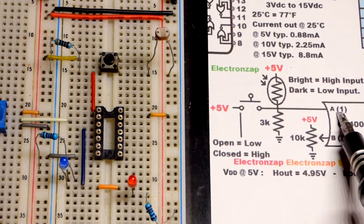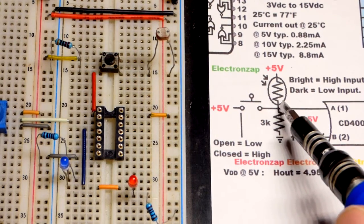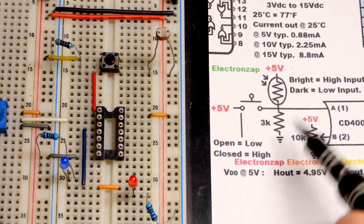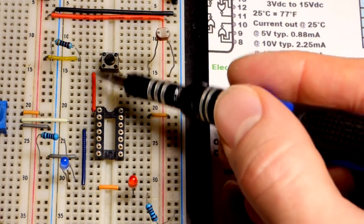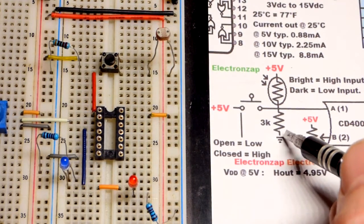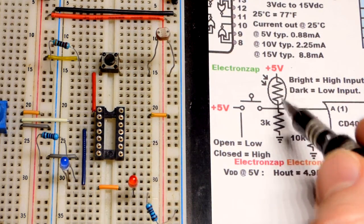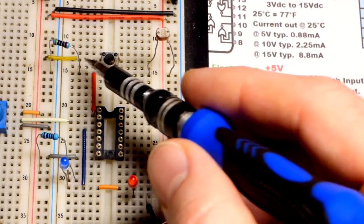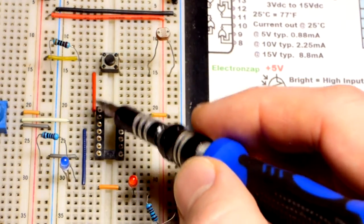Input A is pin number 1. This red jumper goes there. You can see we have a 3000 ohm resistor to the negative supply - that's the pull-down resistor that helps hold the voltage low at pin A if the light is not bright enough. We have a switch there. If I close the switch, that makes a direct connection to the positive supply - that's high, that's five volts.